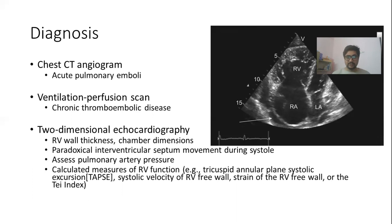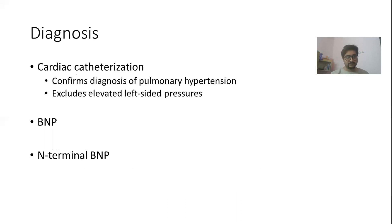2D echocardiography is also an important investigation as it helps measure right ventricular wall thickness and chamber dimensions, shows interventricular septal movement during systole, allows assessment of pulmonary artery pressure, and measures parameters reflecting RV function such as TAPSE, systolic velocity of the tricuspid annular wall, and the Tei index. Cardiac catheterization can confirm the presence of pulmonary hypertension and exclude elevated left-sided pressures. BNP and NT-proBNP can also be measured, as they are elevated when there is stretching of the right ventricle.